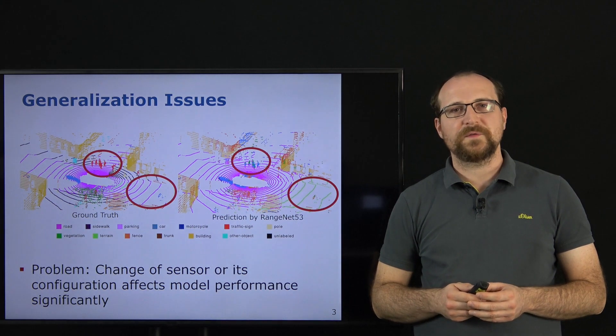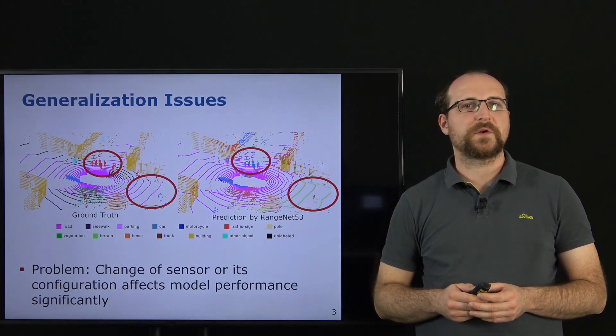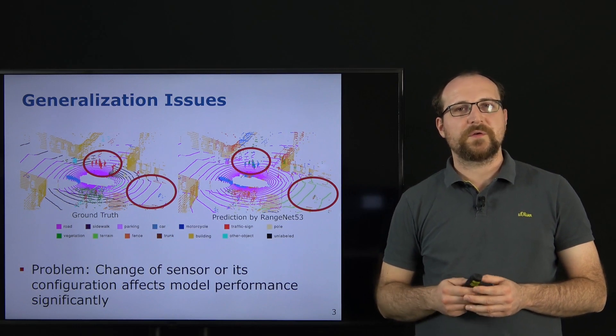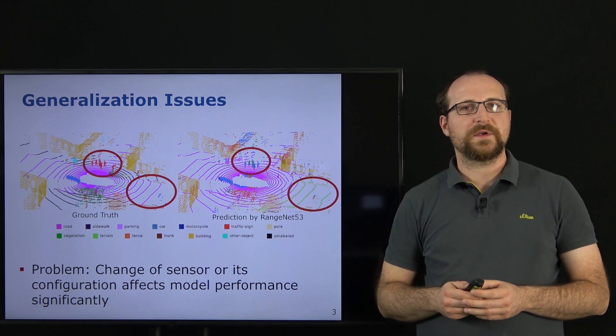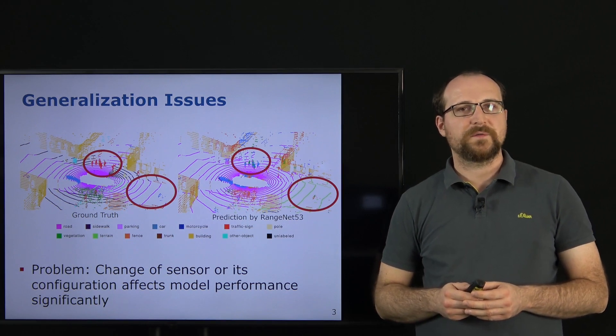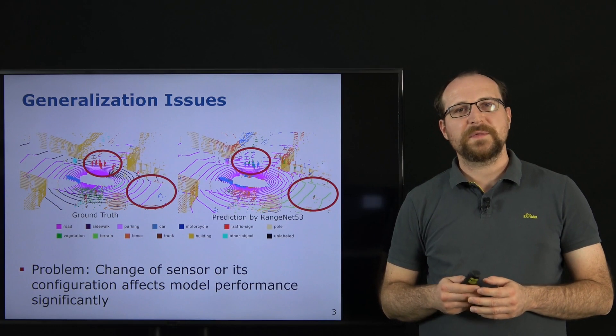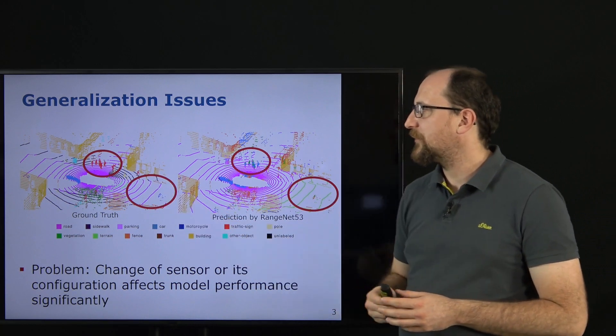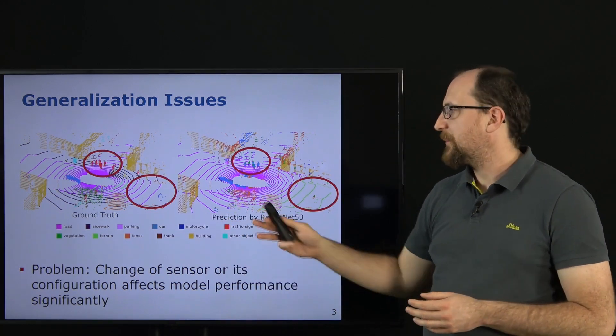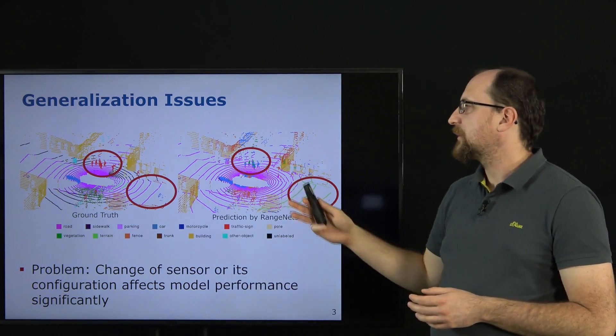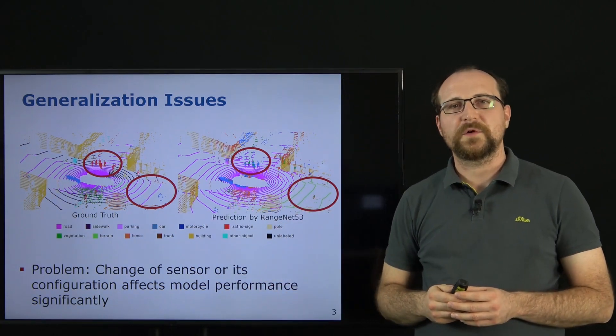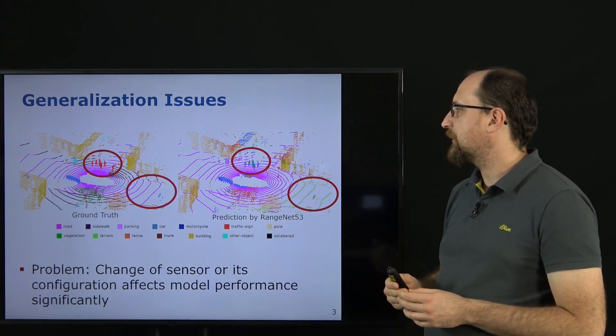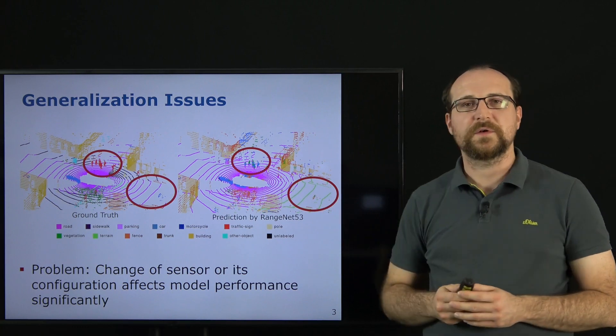However, approaches trained on one specific sensor in a specific sensor configuration usually do not generalize well to other sensor configurations. Here shown is an example where we have trained a semantic segmentation approach on a dataset provided by a 64-beam LiDAR sensor, and apply it to data provided by a 32-beam LiDAR sensor. On the left you can see the ground truth annotation of a traffic junction where pedestrians are crossing. On the right you can see the prediction results of this model, which was only trained on 64-beam LiDAR data. Here you can see that the traffic participants are wrongly classified, and also the road surface is wrongly classified as terrain.